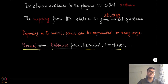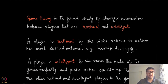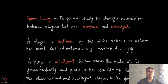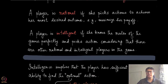Game theory is the formal study of strategic interaction between players that are called rational and intelligent. What do these two terms mean? We call a player rational if that player picks actions to achieve the most desired outcome for that agent. In this example, we have always assumed that players pick the actions which maximize their utilities — that is one way of representing rationality.